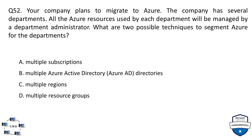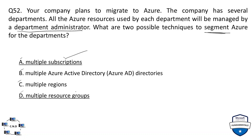Question 52: your company plans to migrate to Azure. Several departments exist and all Azure resources used by each department will be managed by a department administrator. What are two possible techniques to segment Azure for the departments? Options: A) multiple subscriptions, B) multiple Azure Active Directories, C) multiple regions, and D) multiple resource groups. The correct options are A and D.